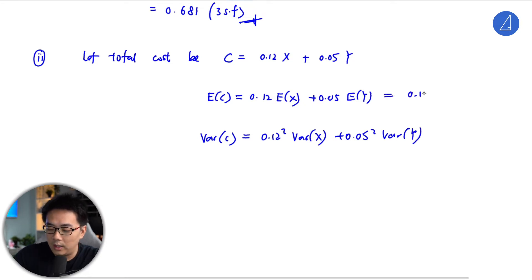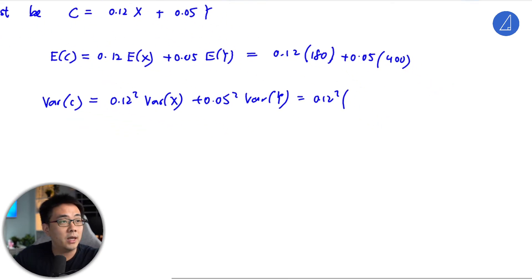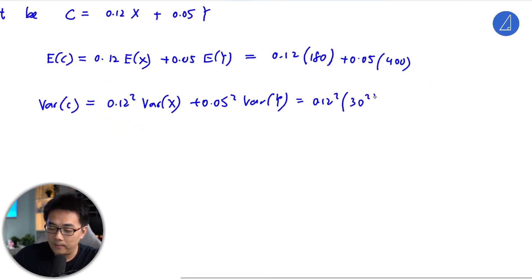So all this is not an issue. Expectation of X we have is 180, and then this is 0.05 expectation of Y would be 400. Then in the calculator, 0.12 squared, variance X will be 30 squared plus 0.05 squared, 60 squared.